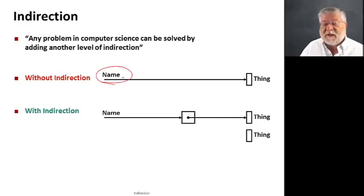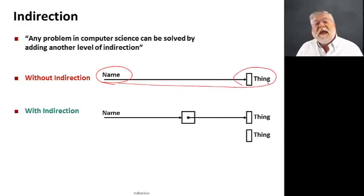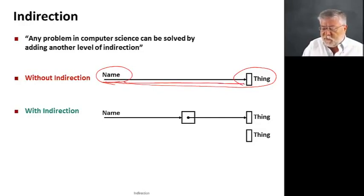So if I have a name for something, like let's say I've stored a pointer in a variable, a pointer type, I can have it point to something in memory. And without indirection, I have a direct link, namely, this variable stores a particular address that points directly to that memory location.